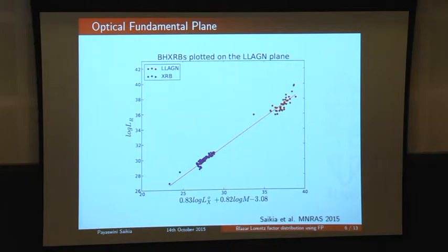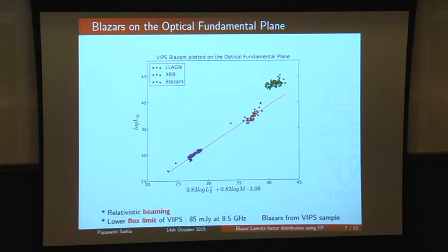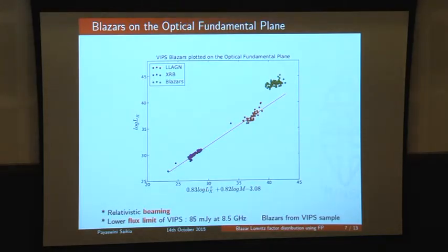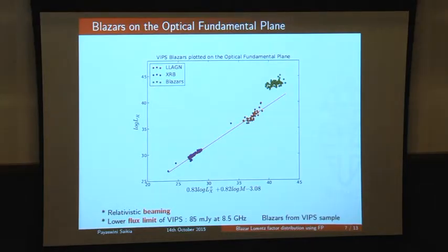But if we want to add high-luminosity flat-spectrum blazars, then we see a huge discrepancy. In green are the VIPS sample blazars — mainly flat-spectrum radio quasars — with available masses. The discrepancy can be explained by two things: the relativistic beaming of these objects, and the lower flux limit of VIPS, which is 85 milli-Jansky at 8.5 GHz. The question we ask is: using the theoretical understanding from the fundamental plane and the VIPS observations, can we constrain the jet Lorentz factor distribution?